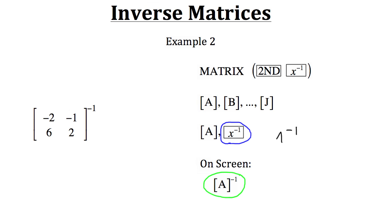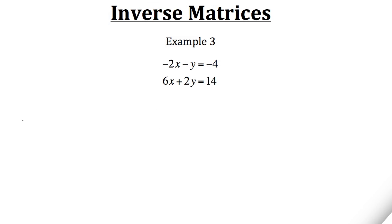The calculator result matches exactly what we calculated by hand. This method doesn't only work for 2×2 matrices — you can also use it to find the inverse of a 3×3, 4×4, or larger matrix. For matrices bigger than 2×2, it is recommended to use the calculator method, as calculating the inverse by hand becomes very involved and meticulous.